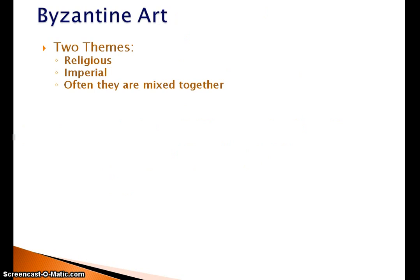Byzantine art has two themes: it's either religious or imperial. Most of the time, however, these two are often mixed. This reflects the state of the government in the Byzantine Empire. You had the emperor, who was technically the head of the Byzantine Greek Orthodox Church, who appoints the Patriarch of Constantinople, who administers this church for him.